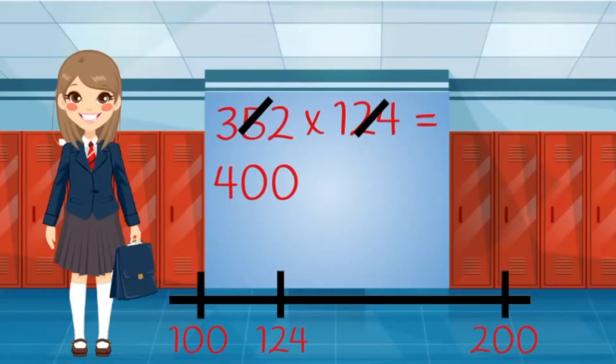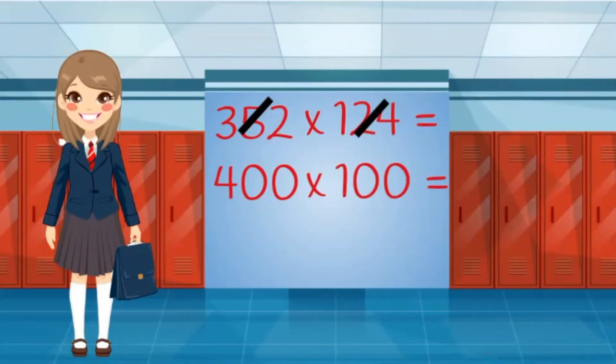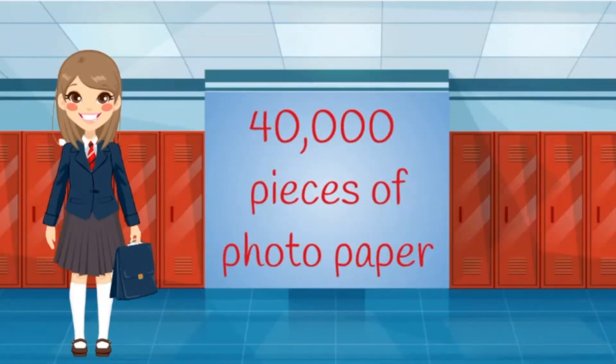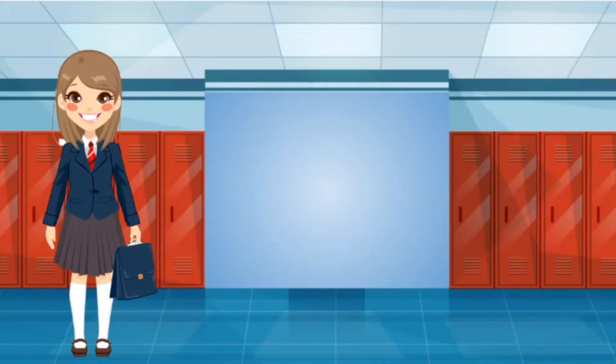To estimate, I will multiply 400 times 100. I'll ignore the zeros for now. Four times one equals four. I need to add back the four zeros from the numbers - that makes 40,000. That gives me a good idea of how much to buy. 40,000 pieces of photo paper. Wow!